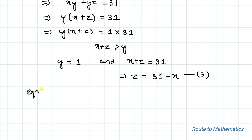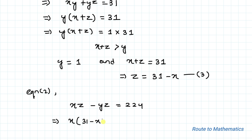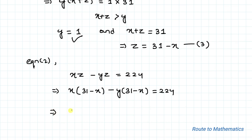Now let's substitute the value of z into equation 2. From equation 2 we have x·z - y·z = 224. Substituting z = 31 - x and y = 1, we get x·(31 - x) - 1·(31 - x) = 224, which simplifies to 31x - x² - 31 + x = 224.